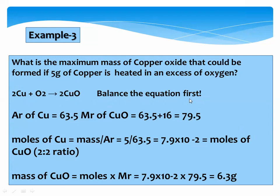The relative atomic mass of copper is 63.5. The relative molecular mass of copper oxide is 63.5 + 16 = 79.5. Moles of copper equals given mass (5 g) divided by relative atomic mass (63.5), giving 7.9 × 10⁻² moles. The Cu to CuO ratio is 2:2. Mass of copper oxide equals moles multiplied by relative molecular mass: 7.9 × 10⁻² × 79.5 = 6.3 grams.